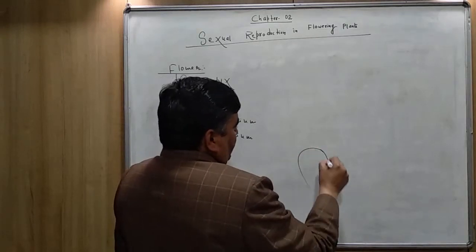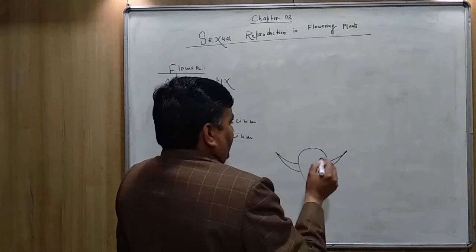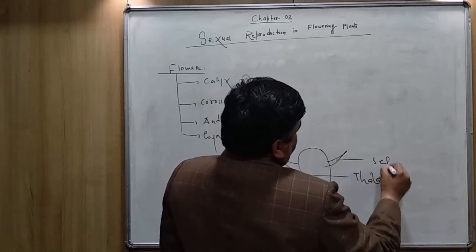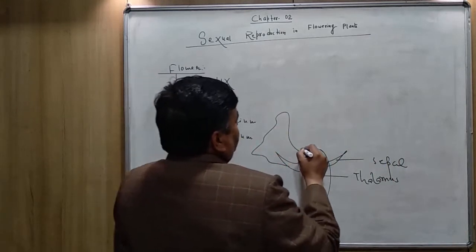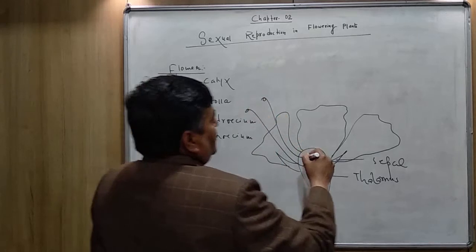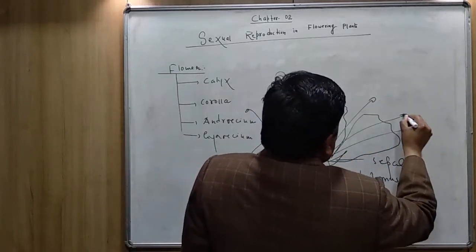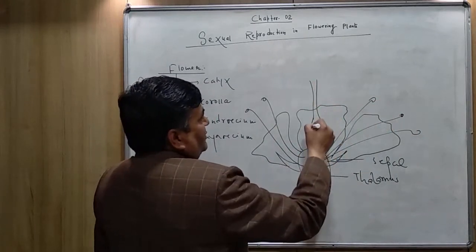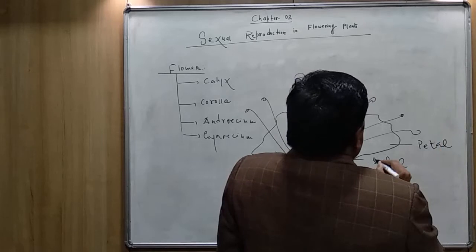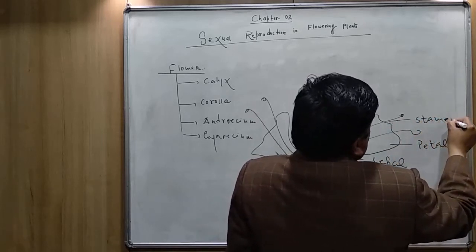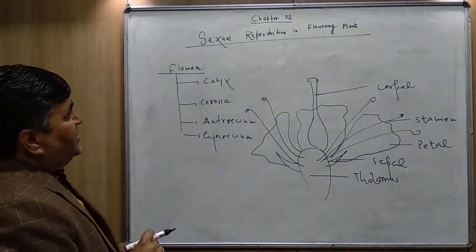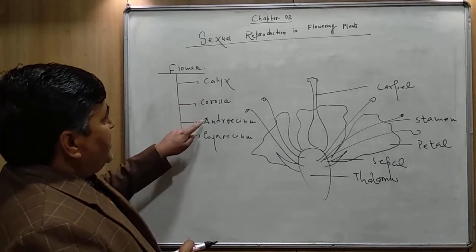You can see here the diagram of a typical flower. This is the thalamus, these are the sepals, these are the petals, this is the stem, and in the center there is the carpel. So a typical flower consists of: calyx, corolla, androecium, and gynoecium. Calyx is made up of sepals, corolla is made up of petals, androecium consists of stamens, and gynoecium is made up of carpels.